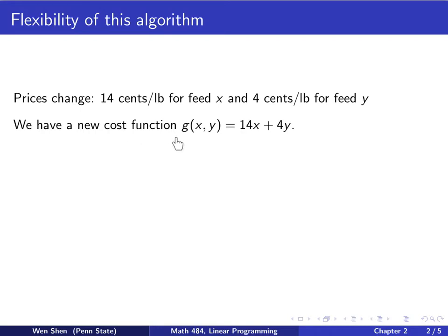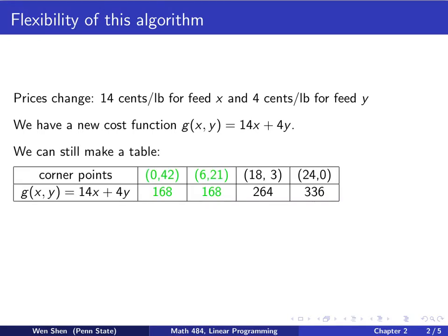With that change, then we have a new cost function, which we call g. That would be 14 times x plus 4y. Now with this change, how would the change be for our optimal solution? So we use our new algorithm, we make a table.